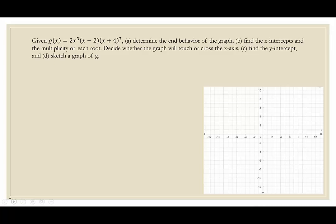Our first example, we're given g of x. We want to determine the end behavior, find the x-intercepts and the multiplicity of each root, decide whether the graph will touch or cross the axis, find the y-intercept, and then lastly sketch a graph of g. First, the end behavior. To determine the end behavior, we need two pieces of information: the degree of the polynomial and the leading coefficient. What we care about with the degree is whether it's even or odd, and with the leading coefficient whether it's positive or negative.